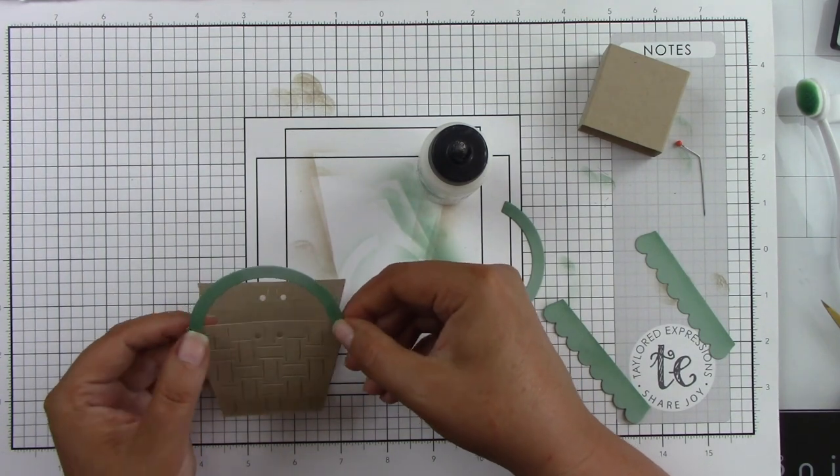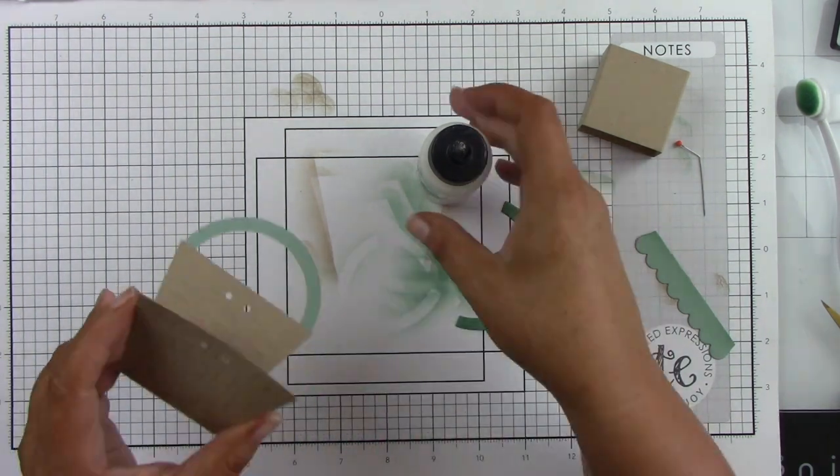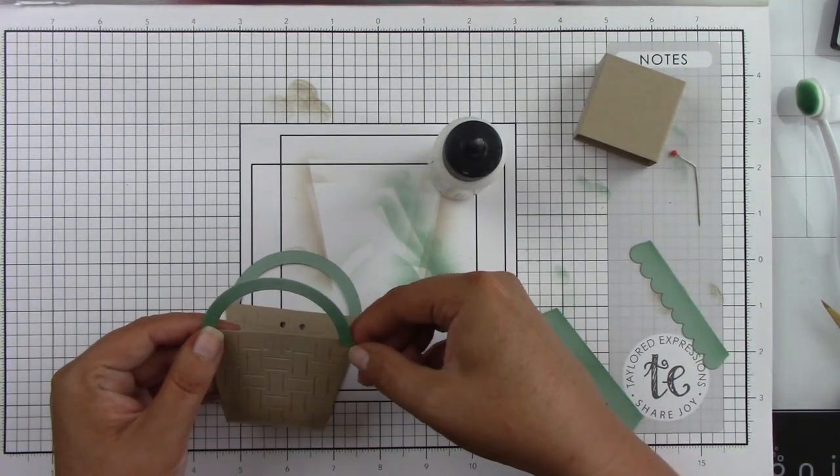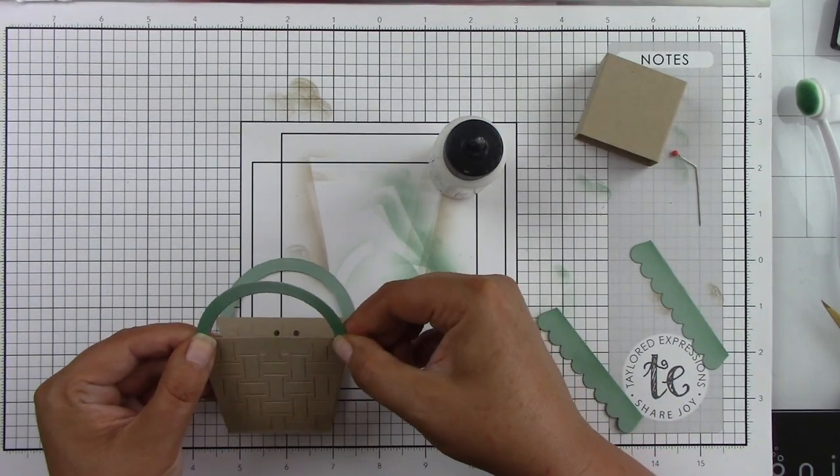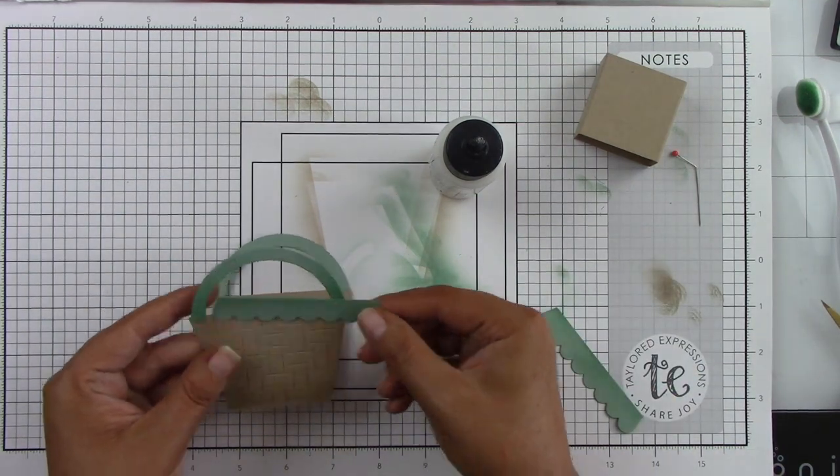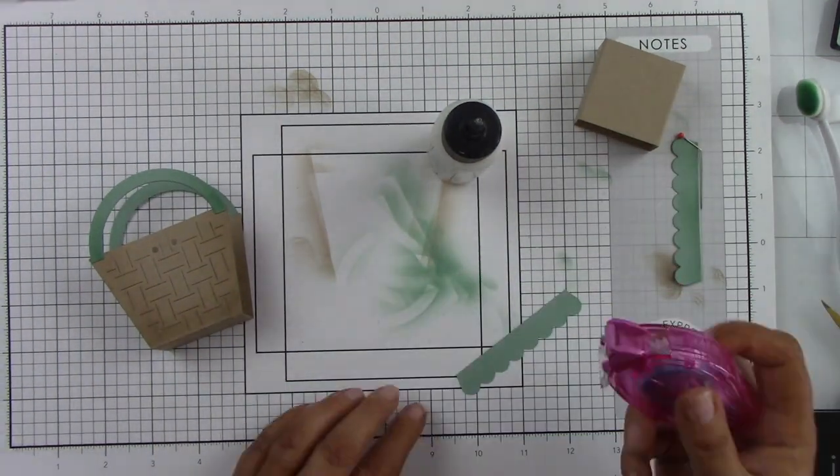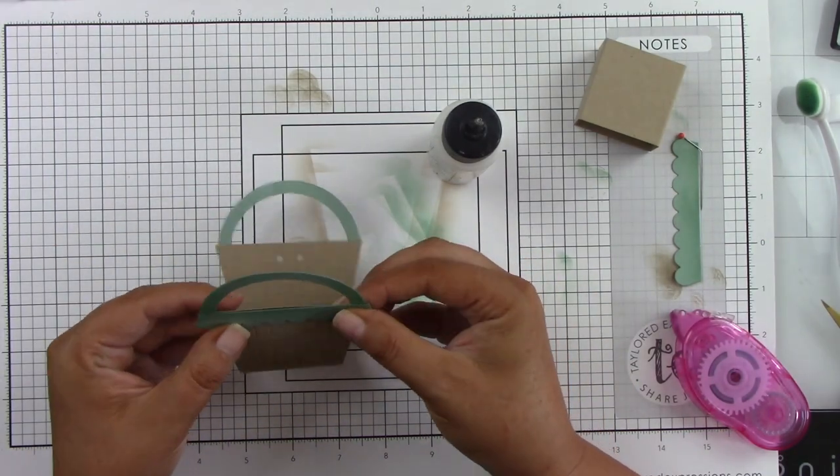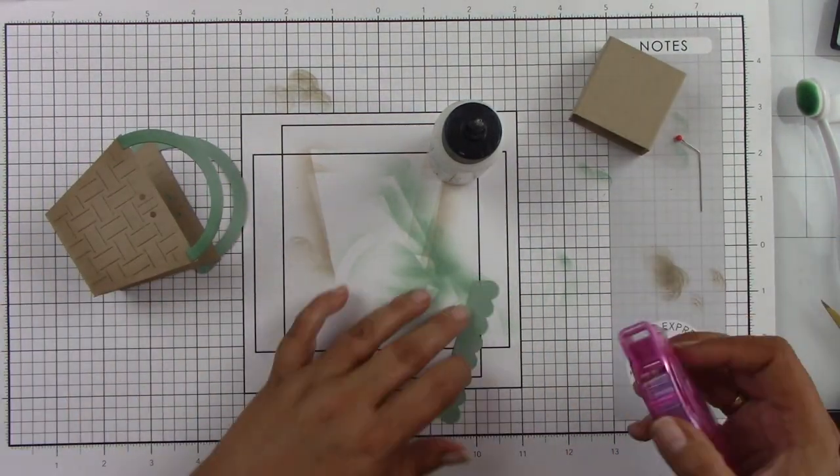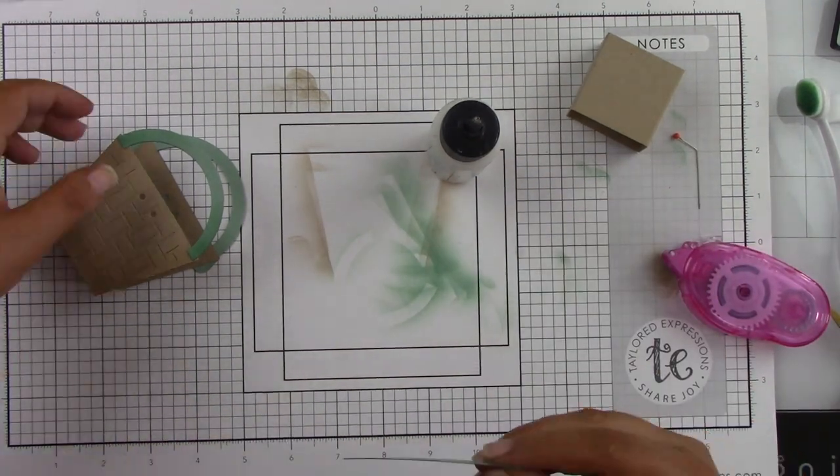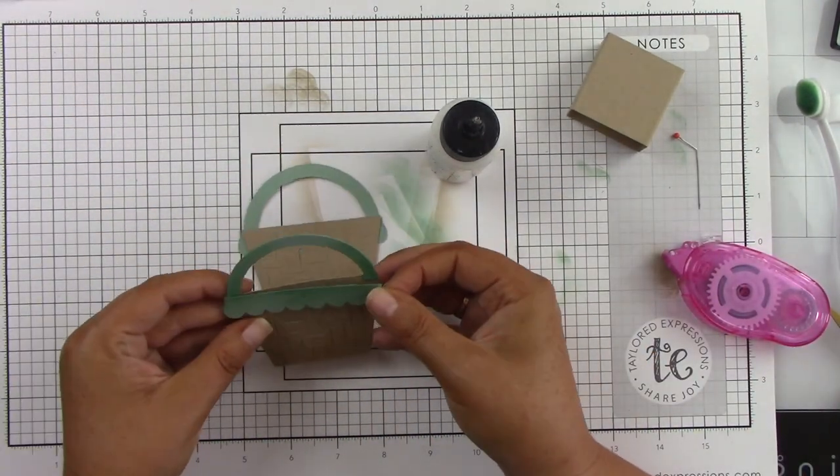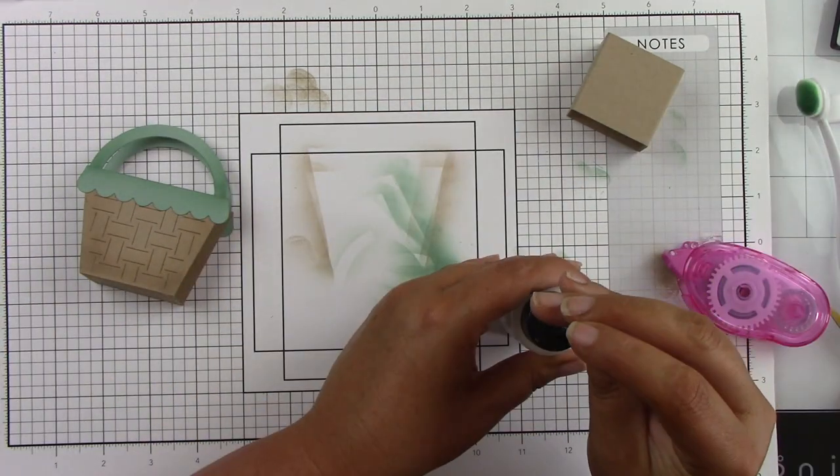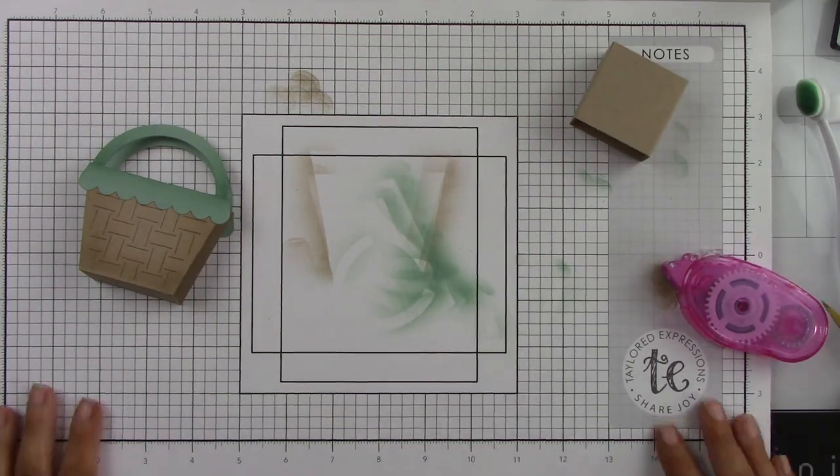So now let's put this basket piece together. I'm going to glue on the handles. I'm using some liquid glue to adhere that down on both sides. And then I will use some tape runner for the little scallops. You could also die cut these pieces four times and put them on the inside of your basket. And that would be really cute too. So it would kind of finish off the inside. So I'm just going to adhere this last little scalloped edge. And you've got this really cute little basket.